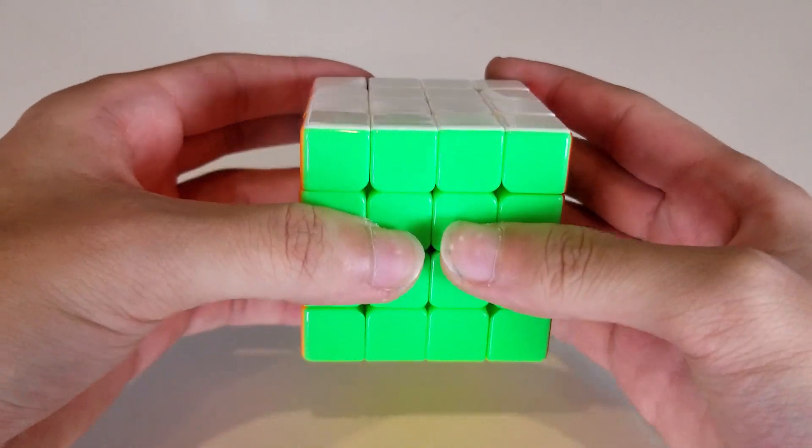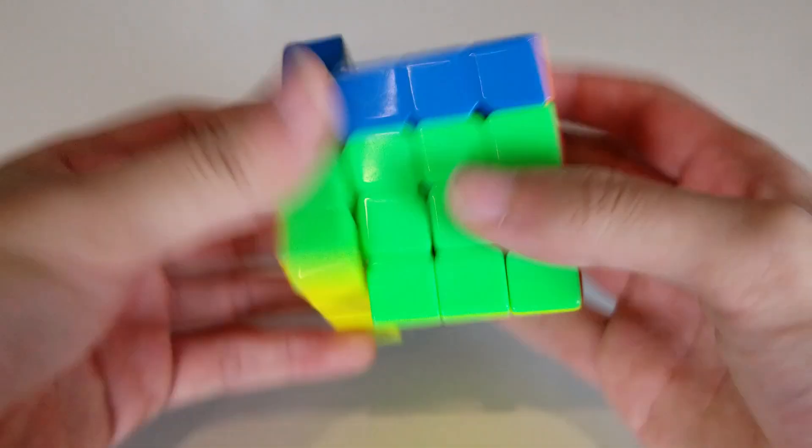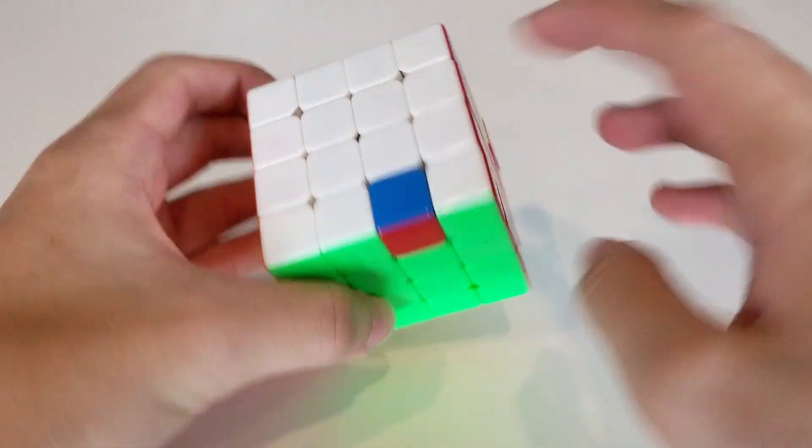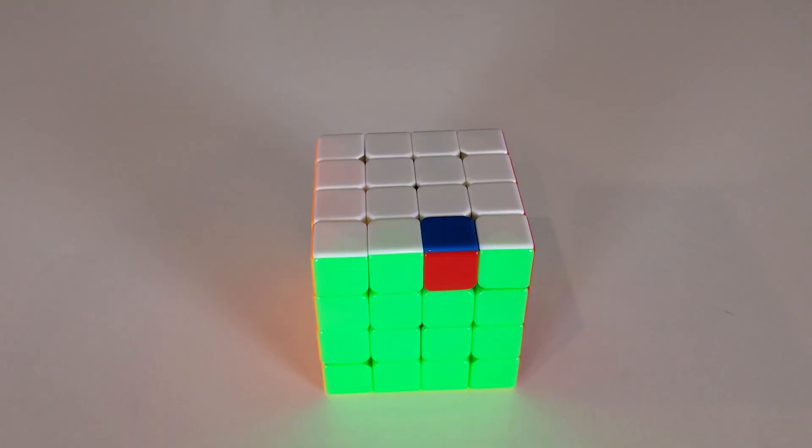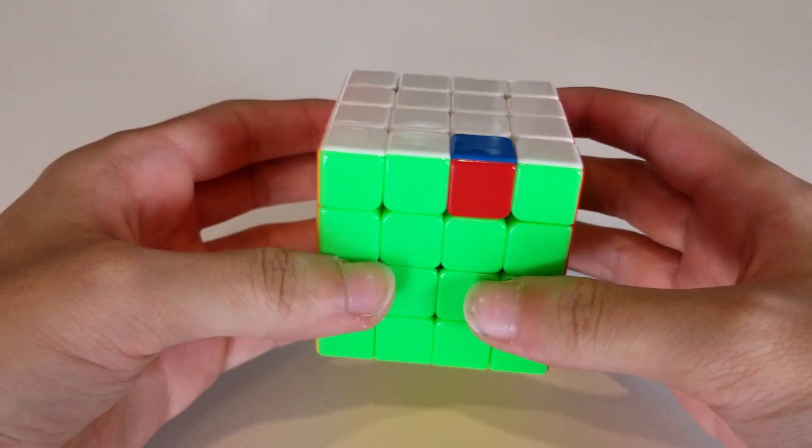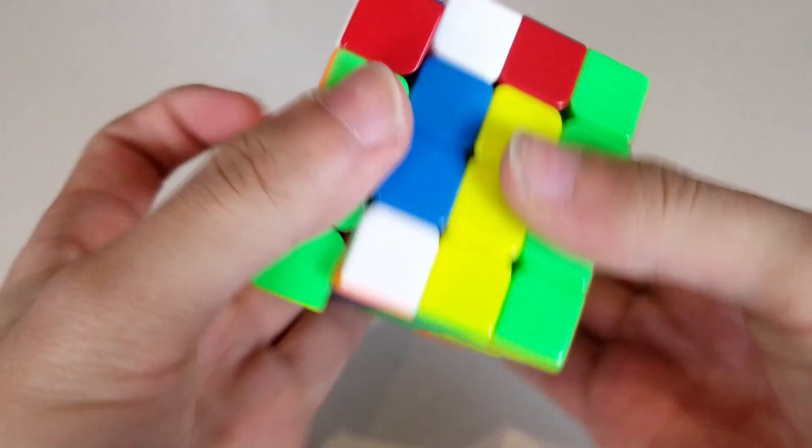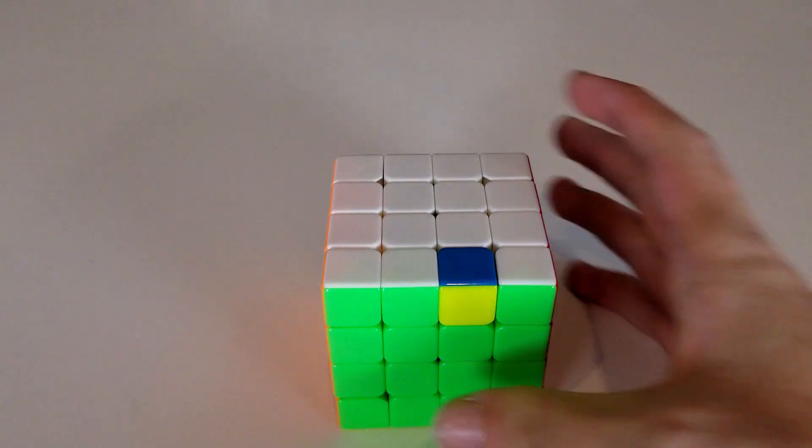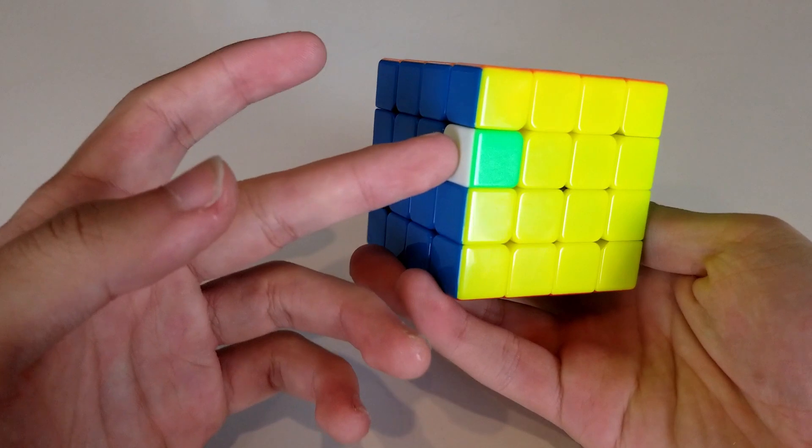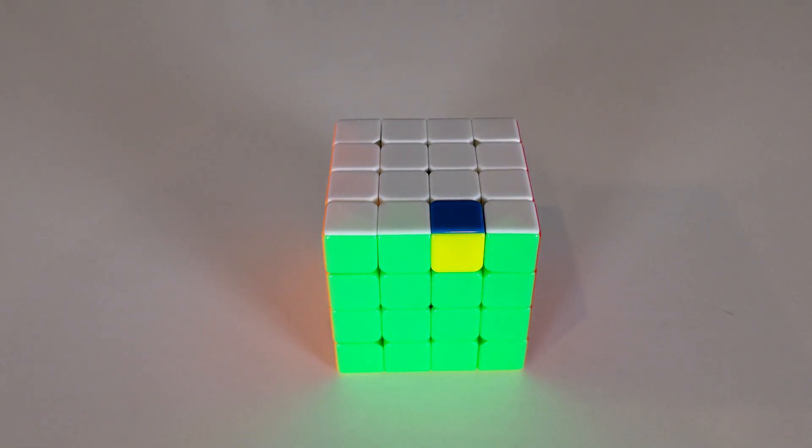Additionally, if we do a 3-cycle, here's a wing 3-cycle, we need to do 2 2-swaps to bring it to the solved state, which means this also has even parity. However, if we bring the cube into a state where the wings need 1 2-swap to be brought to the solved state, this state has odd wing parity.